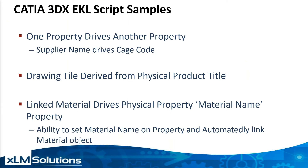The first one will be about having one property within CATIA drive another property. In this example, we're going to use supplier name to drive CAGE code. Many customers want supplier and CAGE code on the properties and on the drawing, but only want to fill in the information once. So by filling in the supplier name, it will automatically fill in the CAGE code, and then both pieces of information can be used within the CAD data.